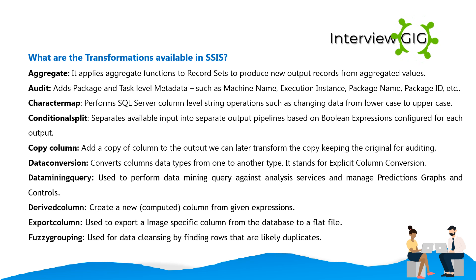Transformations available in SSIS include: Aggregate — applies aggregate functions to record sets to produce new output records; Audit — adds package and task level metadata such as machine name, execution instance, package name, package ID; Character Map — performs column-level string operations such as changing data from lowercase to uppercase; Conditional Split — separates input into separate output pipelines based on Boolean expressions; Copy Column — adds a copy of a column to the output; Data Conversion — converts column data types from one to another; Data Mining Query — performs data mining queries against Analysis Services; Derived Column — creates a new computed column from given expressions.